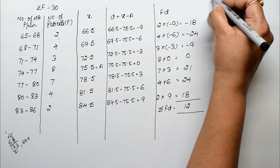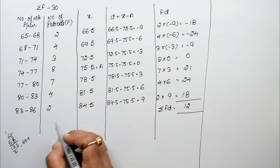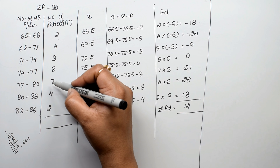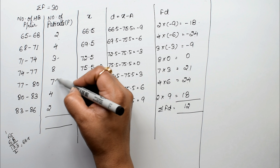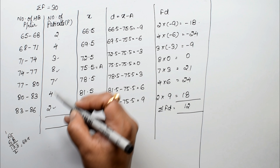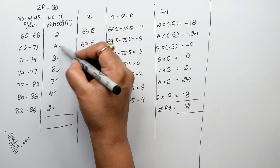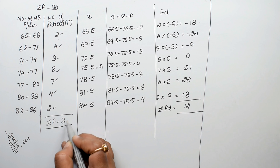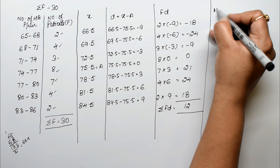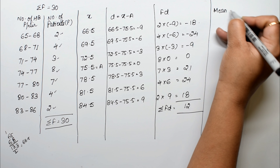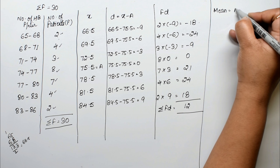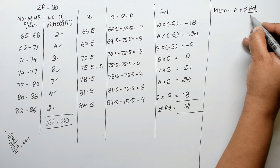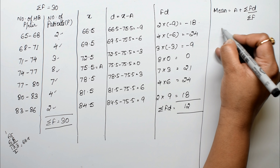We verify summation f: 2 plus 4 plus 3 plus 8 plus 7 plus 4 plus 2 equals 30, which matches. Now applying the assumed mean formula: mean equals a plus summation fd over summation f equals 75.5 plus 12 over 30.